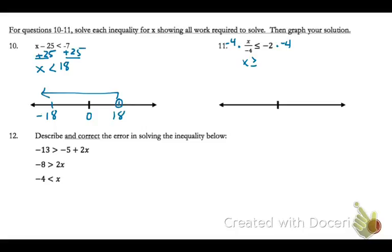Negative 2 times negative 4 is positive 8. So now I need to show everything that's greater than or equal to positive 8. I'll put a closed circle on 8, and then my shaded area is everything that's greater than 8.